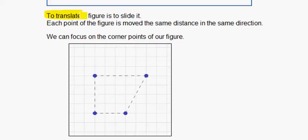To translate a figure is to slide it. Each point of the figure is moved the same distance in the same direction. We can focus on the corner points of our figure.